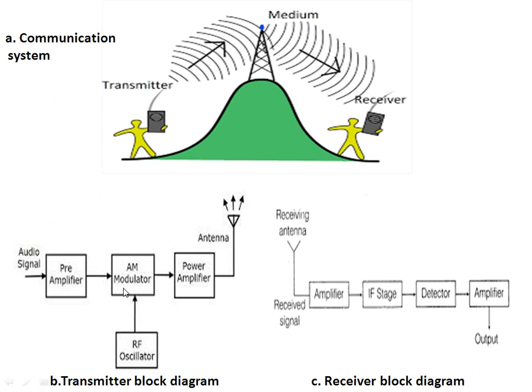Now just see diagram B. This is a block diagram of the transmitter. In this, the first block has input coming from some audio signal — that is the source of information. Then the signal will go through some processing like amplifier and modulator. Then the very last element of that block diagram is nothing but the antenna. This transmitter antenna takes the electrical signal from the power amplifier, converts it into electromagnetic waves, and then radiates it into the media.